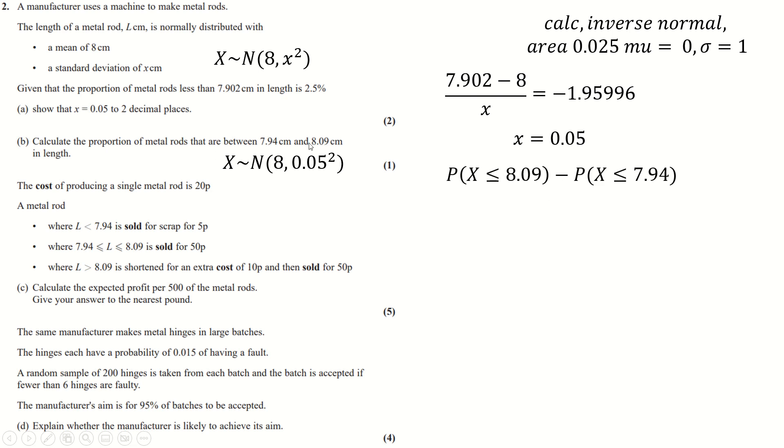Now, the probability of being between those two things is just the probability of being less than this one, minus the probability of being less than this one. And then you type these things into the calculator using the same normal CD function we used on the previous page with these two numbers, and we get these two results, which we take away and we get this.